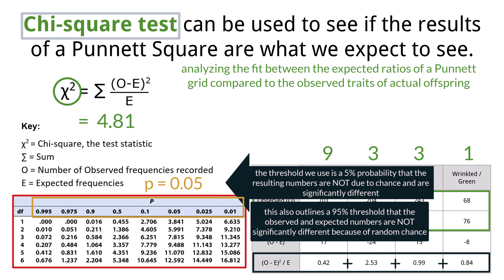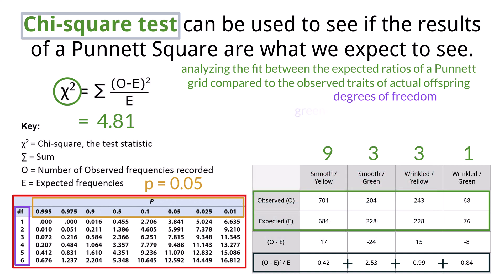The p is seen at the top of the chi-square distribution table. Degrees of freedom (df) are calculated by counting the number of groups and subtracting 1. We have green, yellow, wrinkled, and smooth, so 4 groups. Subtracting 1 gives us our degrees of freedom of 3.